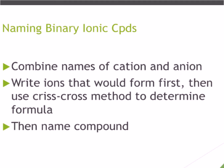As far as naming — that was writing the formula by crisscrossing two ions to get a balanced formula. Naming them follows the same process: we take the cation name and the anion name and put them together. We'll write our ions and get our formula first, and then name the compound. Let's practice that right now.